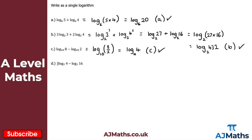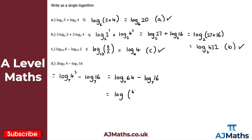For part d, we have 3 log 4 base 7 minus log 16 base 7. First, use the power law to bring the 3 up: log(4³) base 7, which is log 64 base 7. Then, subtracting log 16 base 7 and applying the division law gives log(64 over 16) base 7, which equals log 4 base 7. That's our solution, and that brings us to the end of this introduction to logarithms. In the next video we'll look at solving equations involving logarithms.